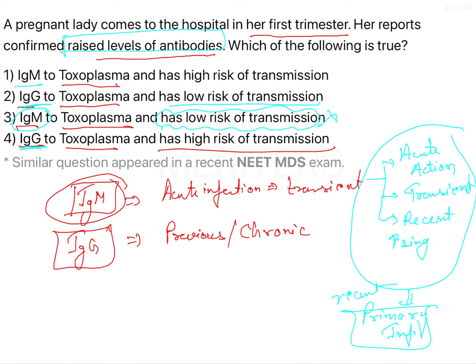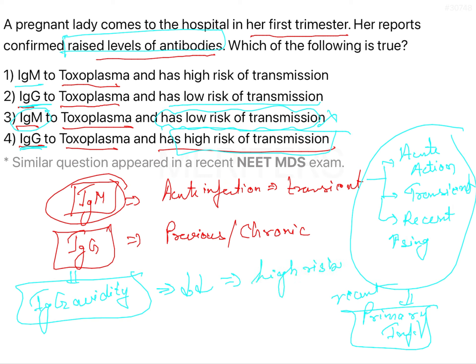Now, option 4 says IgG to toxoplasma with high risk of transmission. There is something called IgG avidity (ABDT). If IgG avidity values are low, that tells you there is a high risk of transmission. And if its values are high, that tells you there is a low risk of transmission. Since avidity is not mentioned here, we will not be going with the high or low risk based on that.